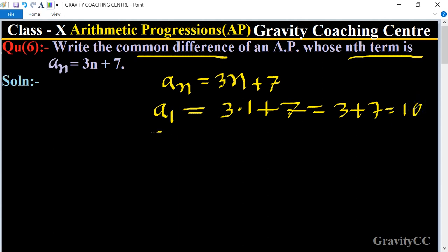Now we put n equal to 2, so it will become 3 into 2 plus 7 equal to 6 plus 7 equal to 13. To find the common difference, we know that the formula of common difference is d equals second term minus first term.